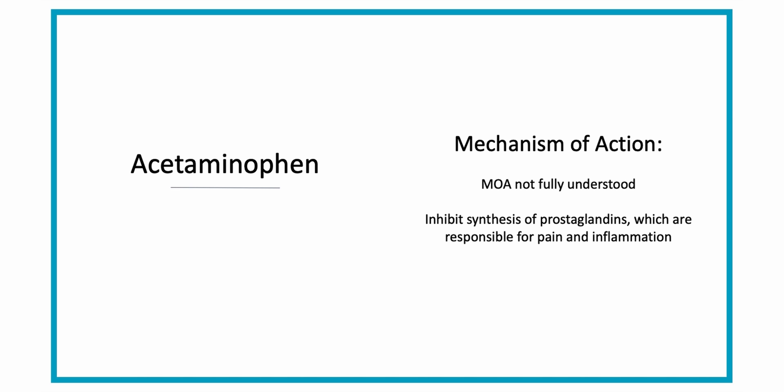The mechanism of action of acetaminophen is not fully understood, but it's thought to inhibit the synthesis of prostaglandins, which are the main component responsible for pain, inflammation, and fever within the central nervous system. It's thought that acetaminophen only affects the prostaglandins in the central nervous system, not systemic, which is why it does not help with inflammation.